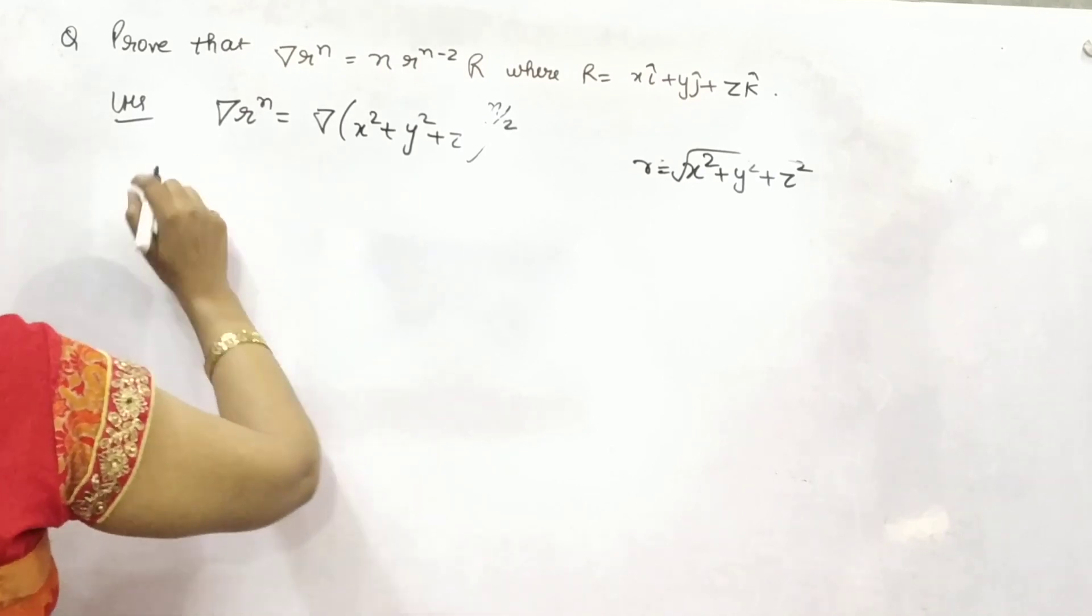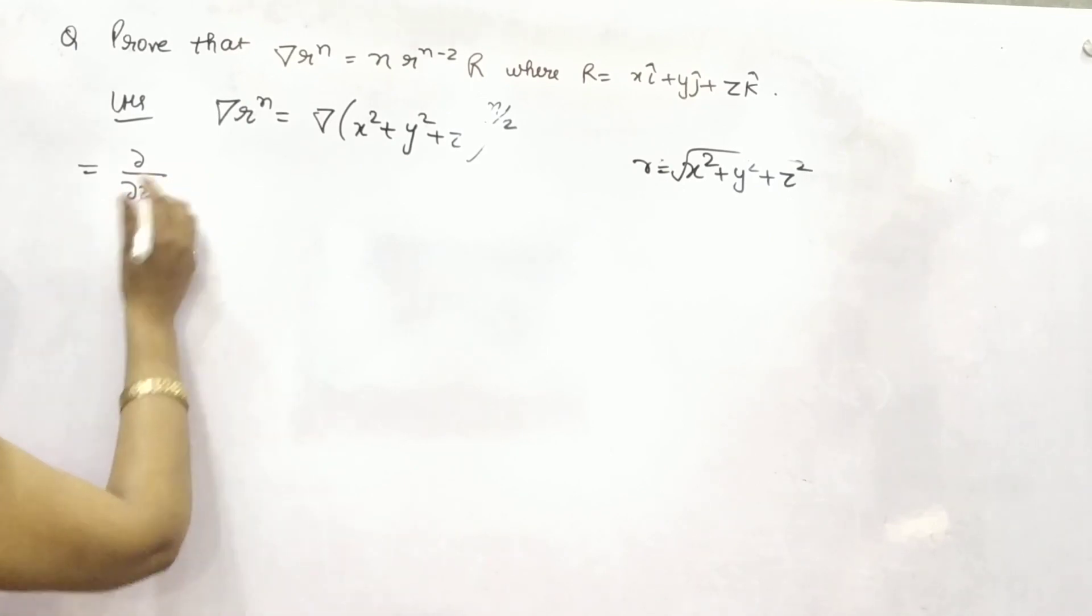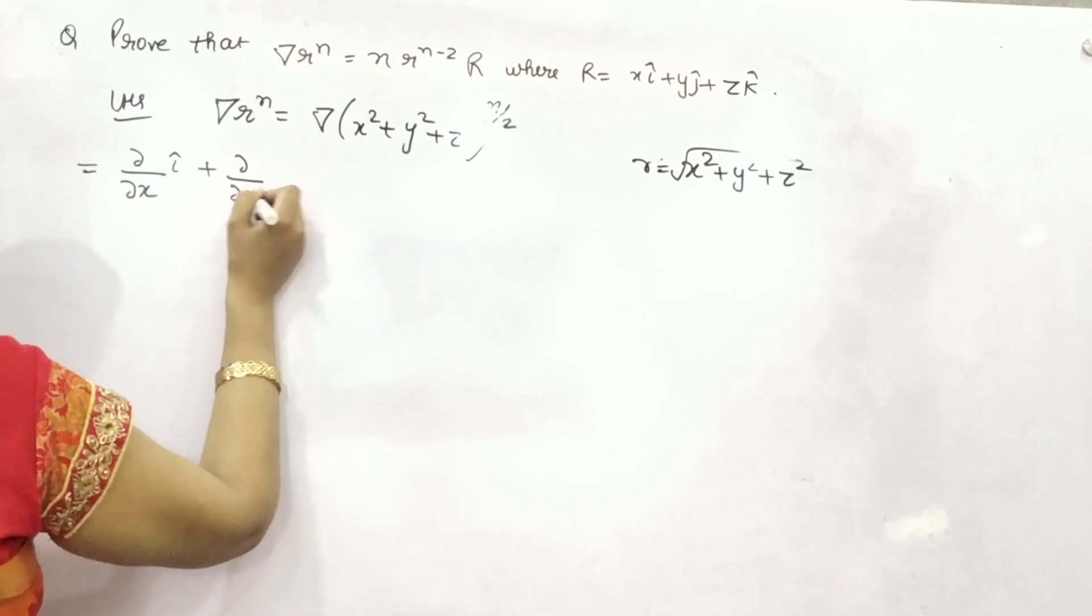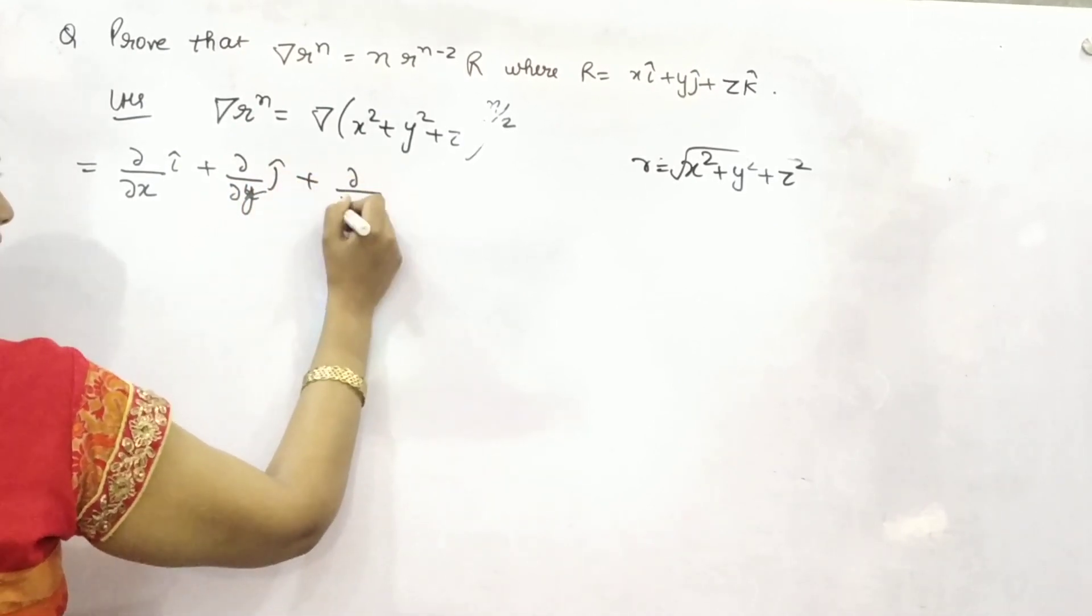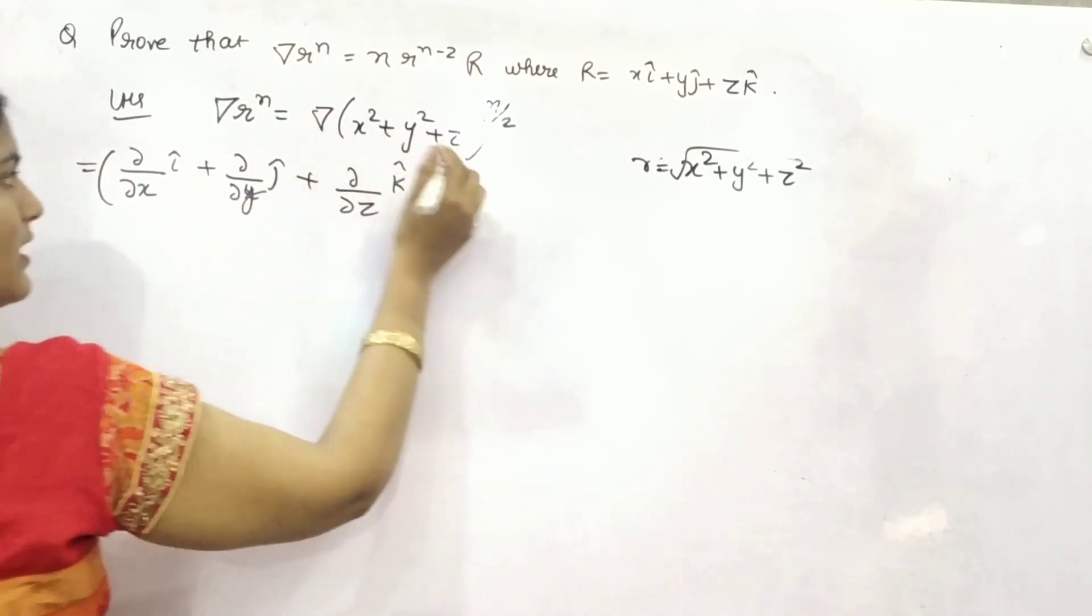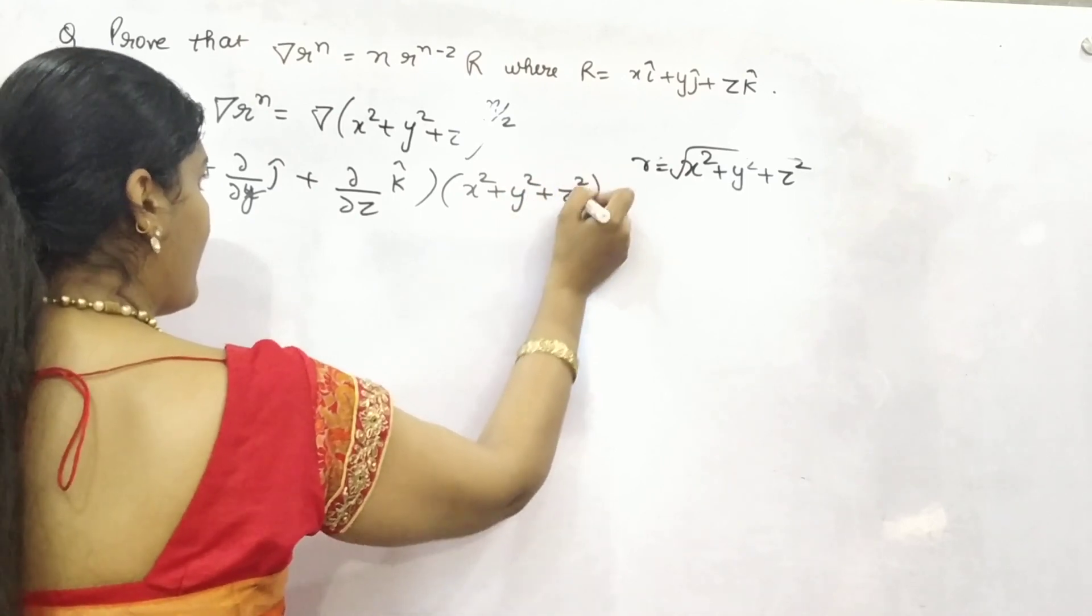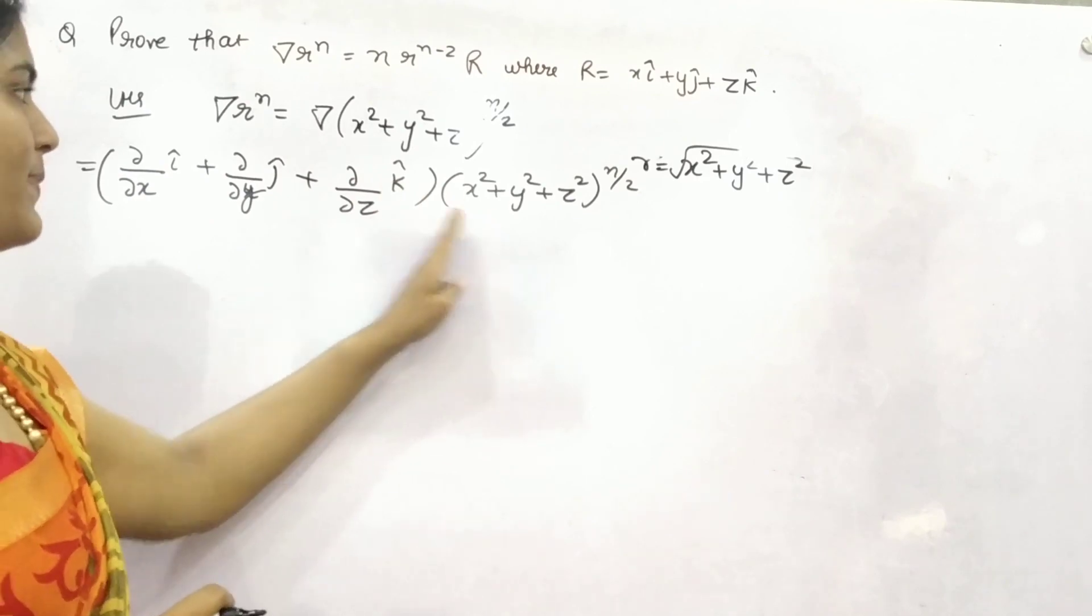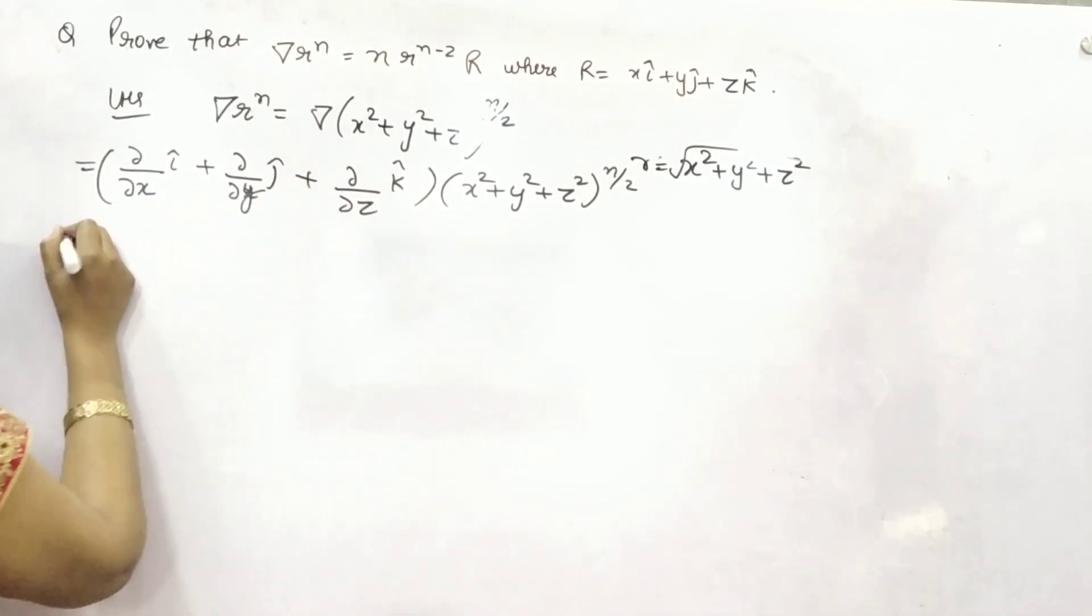Now you know that gradient is partial differentiation with respect to x in i direction, partial differentiation with respect to y in j, and z in k. This is your gradient, and this is your function. Right? Now, differentiate with respect to x, y, and z simultaneously. What you will get?